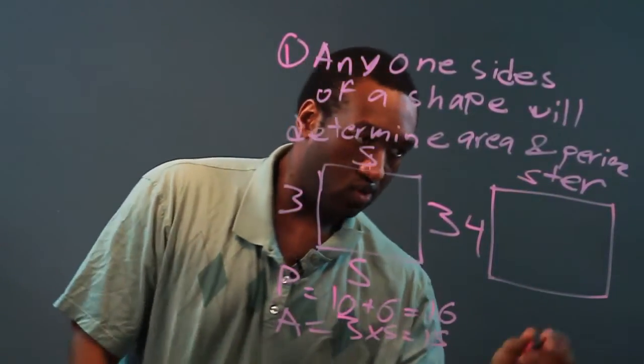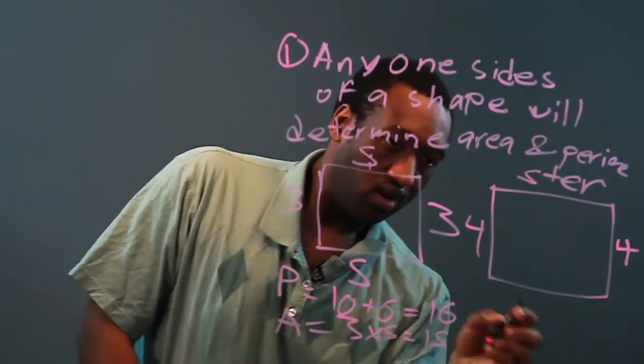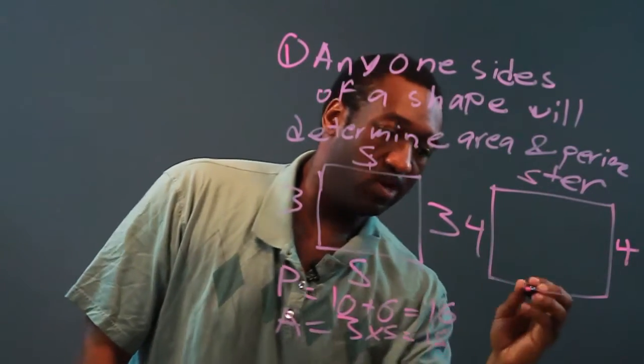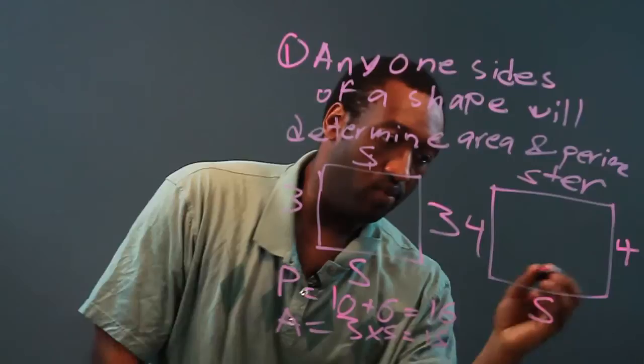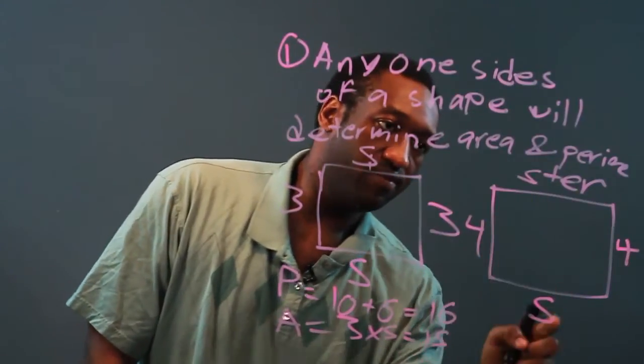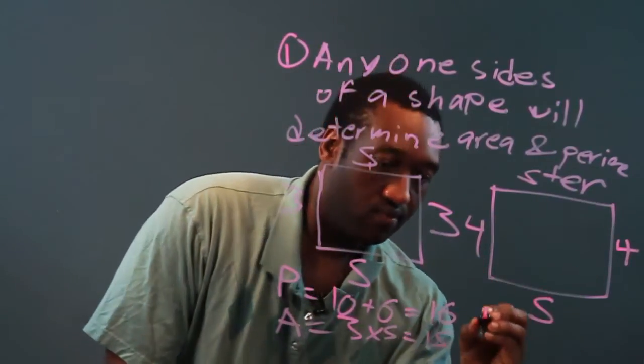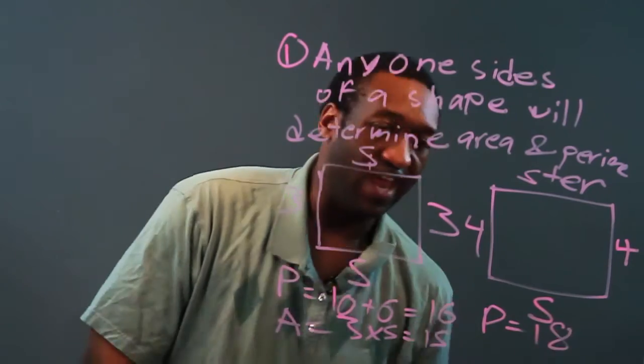Now the perimeter is going to be, once again opposite sides are equal, the perimeter would be five plus five is ten, four plus four is eight, so the perimeter is eighteen.